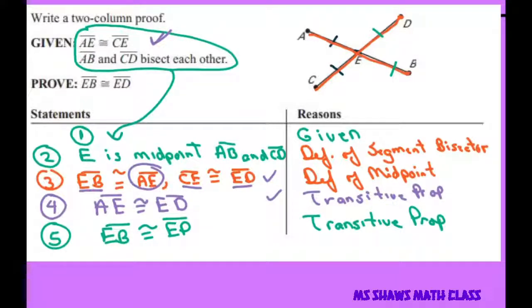So basically we know that EB is congruent to AE, and AB is also congruent to CE, and CE is congruent to ED. So there's where that comes in.